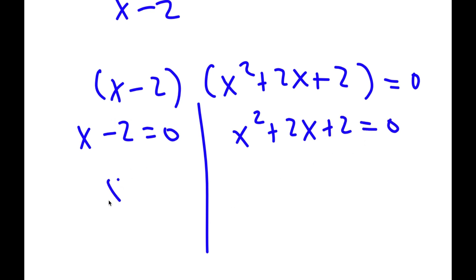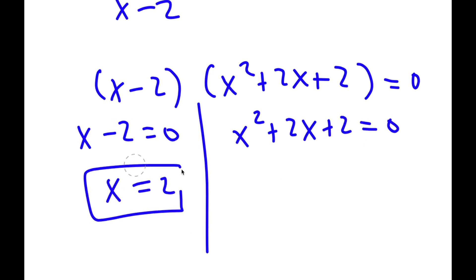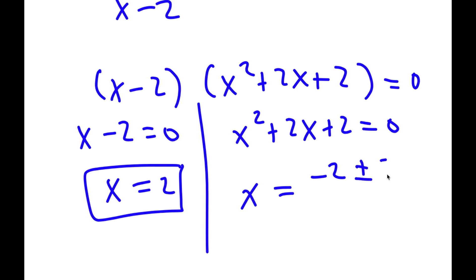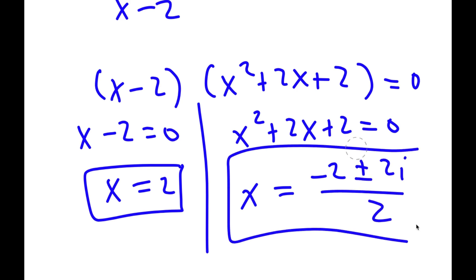For x minus 2 equals 0, x is obviously equal to 2. And for x squared plus 2x plus 2 equals 0, you're going to want to use the quadratic formula to solve this. You should get that x is equal to negative 2 plus or minus 2i over 2. So these are my three solutions to this problem.